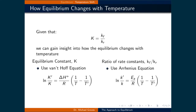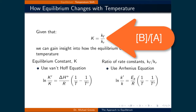Since both the equilibrium constant K and the ratio of the rate constants Kf over Kr is equal to the concentration of B at equilibrium over the concentration of A at equilibrium, we can relate the rate constants to the equilibrium constant, resulting in the equilibrium constant being equal to Kf over Kr.